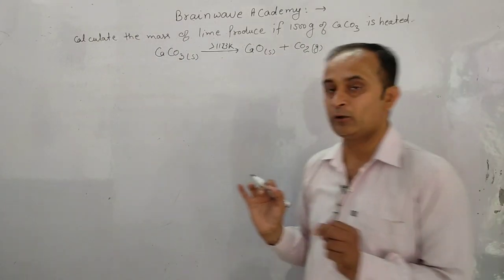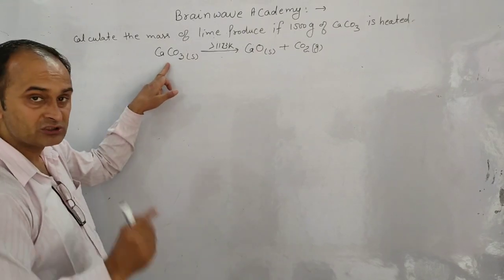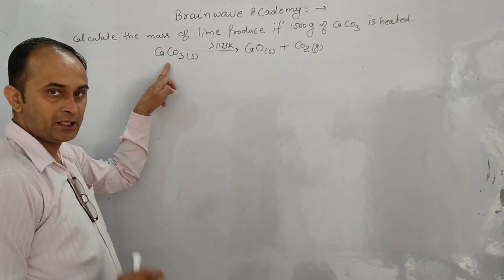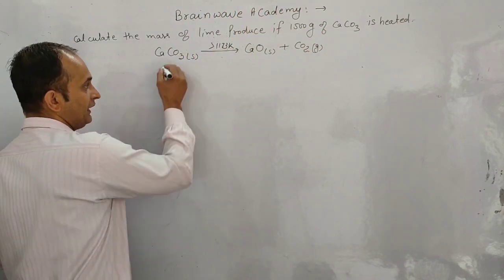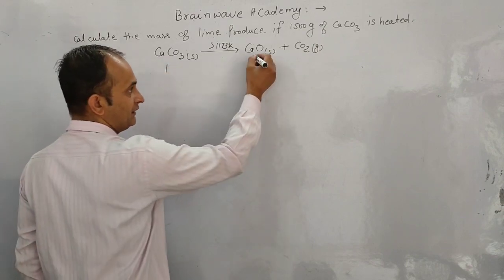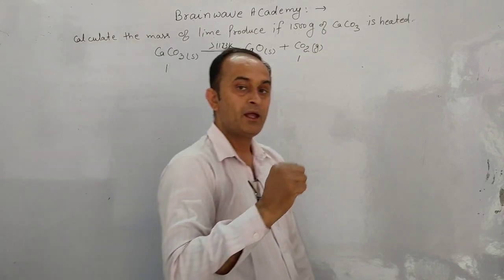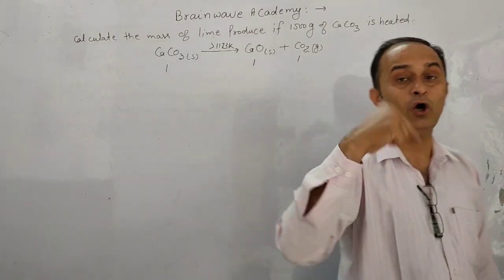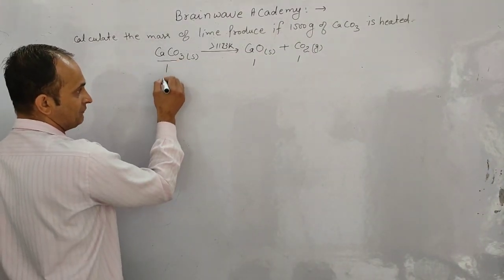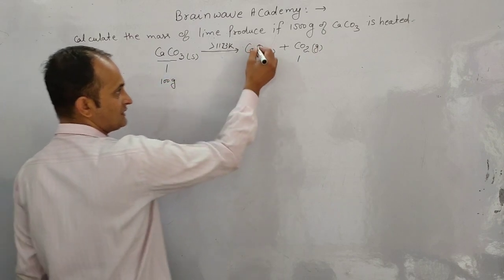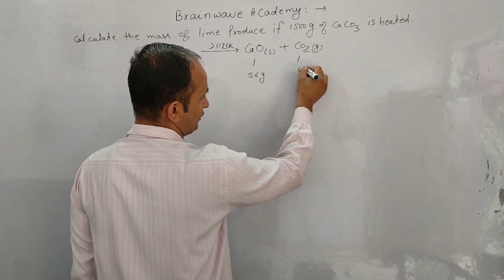Second step: write down stoichiometric coefficients. Stoichiometric coefficients represent the number of moles of reactants and products in a balanced chemical equation. CaCO3: 1 mole reacts; CaO: 1 mole produced; CO2: 1 mole produced. Third step: write down masses. CaCO3 mass = 100 g; CaO mass = 56 g; CO2 mass = 44 g.